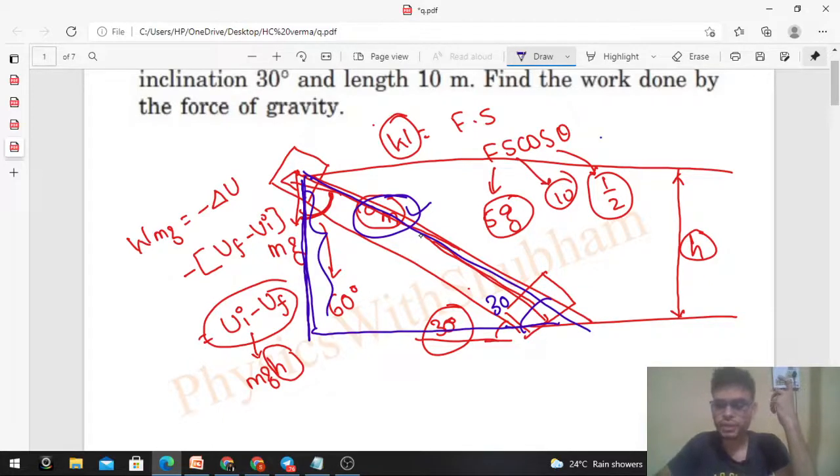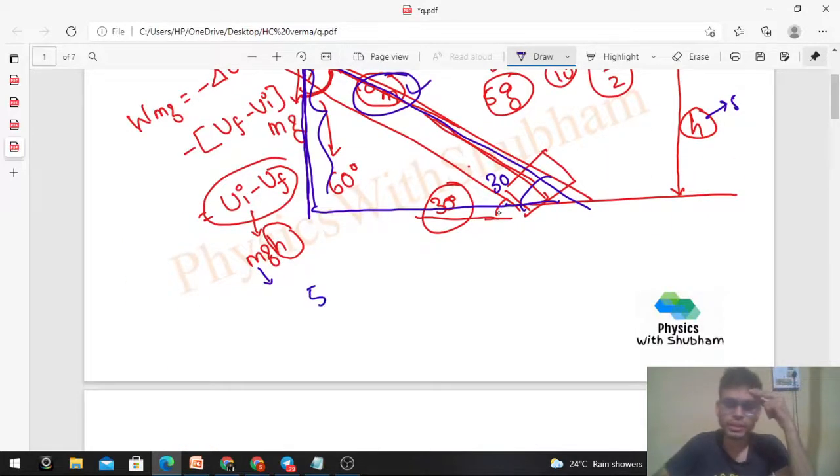So this will be 10 sin 30, which is h - 10 by 2 is 5. So h will be 5. Again, m is given as 5, so m into g into h will be 5. So 25 g, and g value is 9.81. So this way also you can calculate. You will get the same answer.